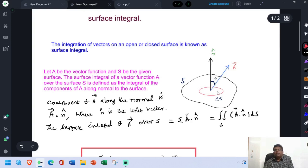As we pointed out earlier, the entire surface is separated into multiple smaller components: Ds1, Ds2, Ds3 and so on.